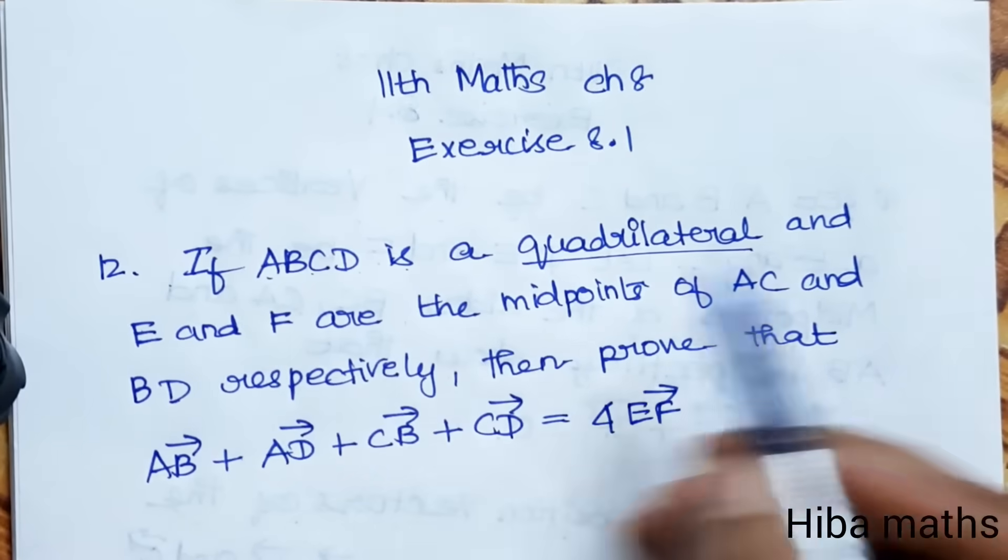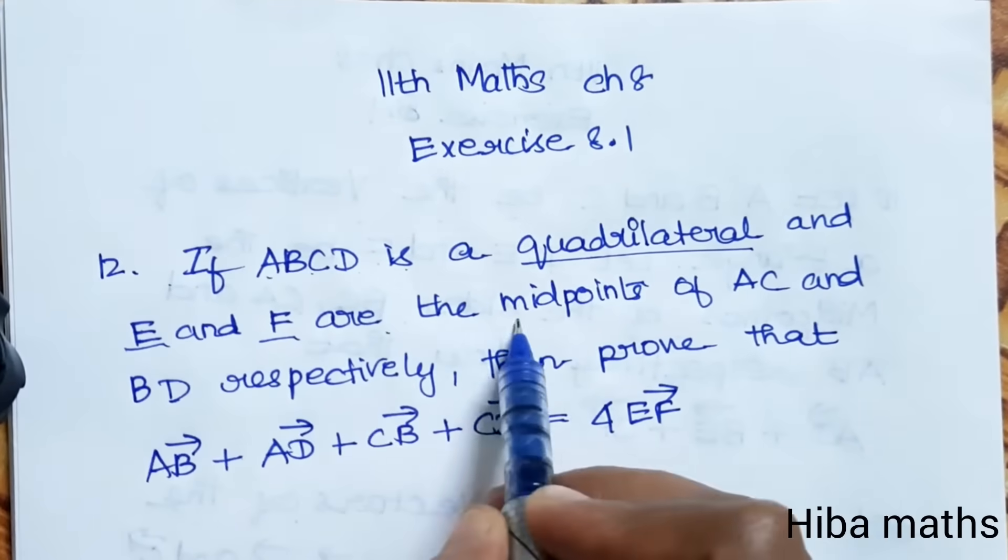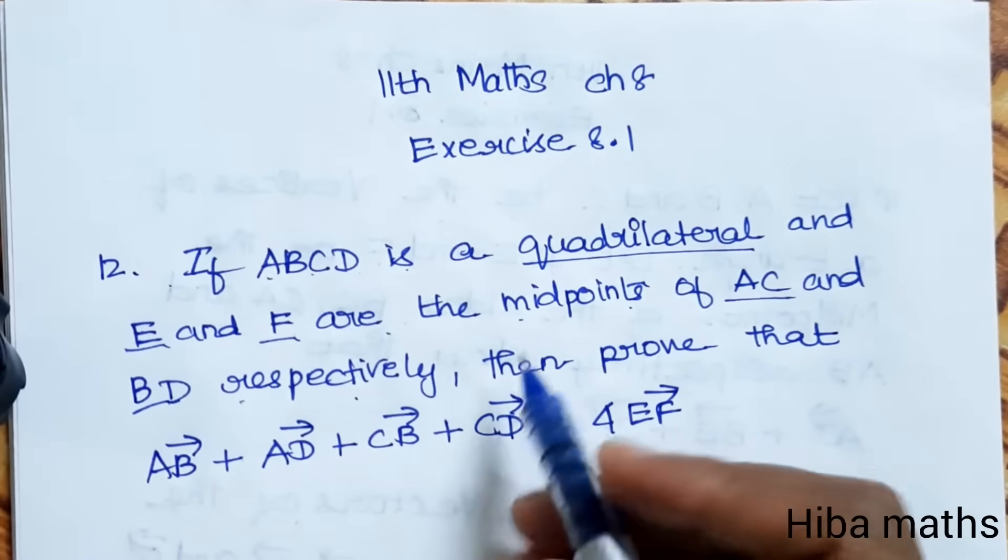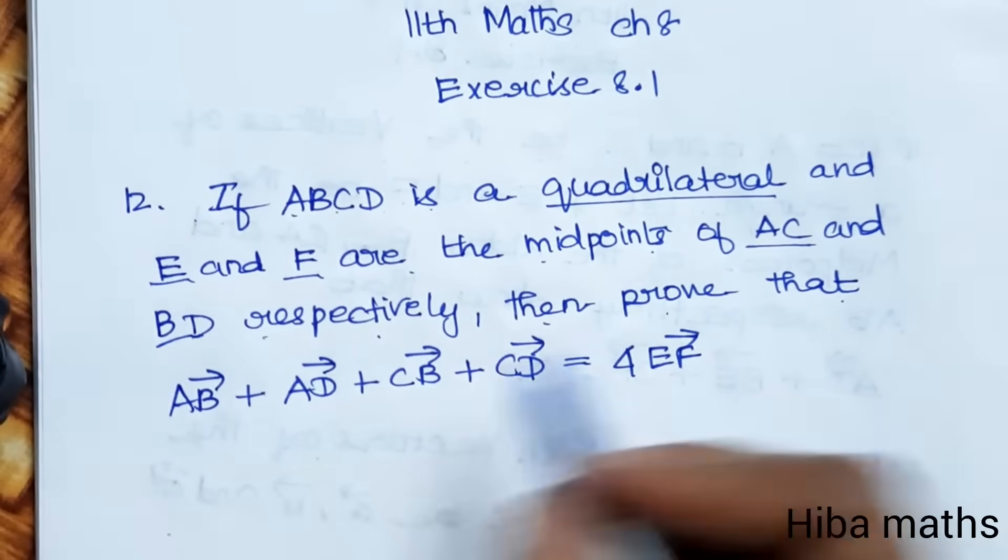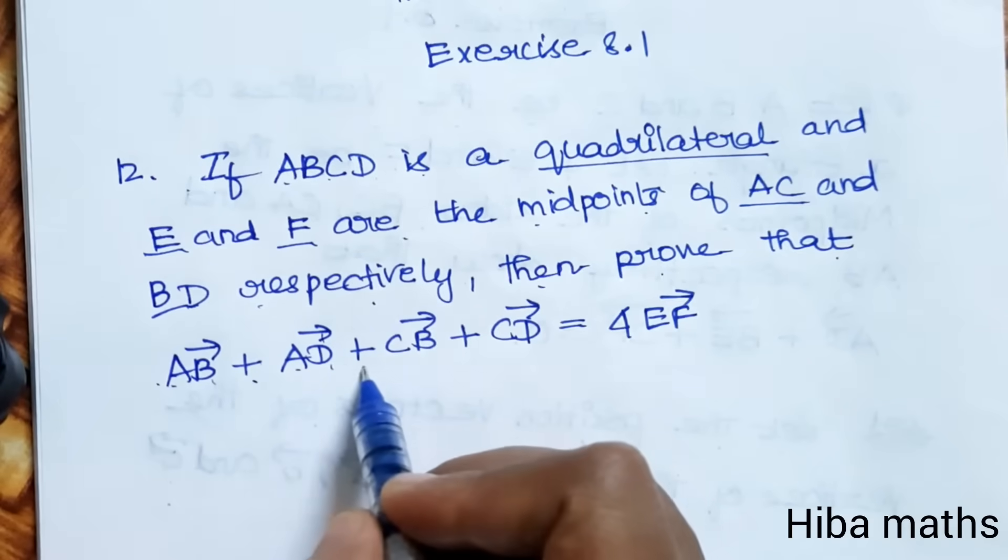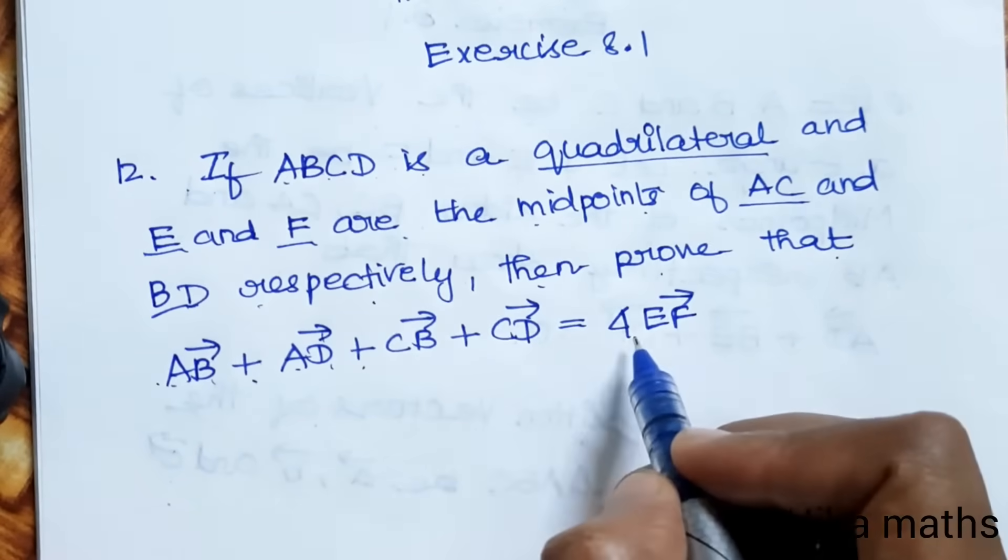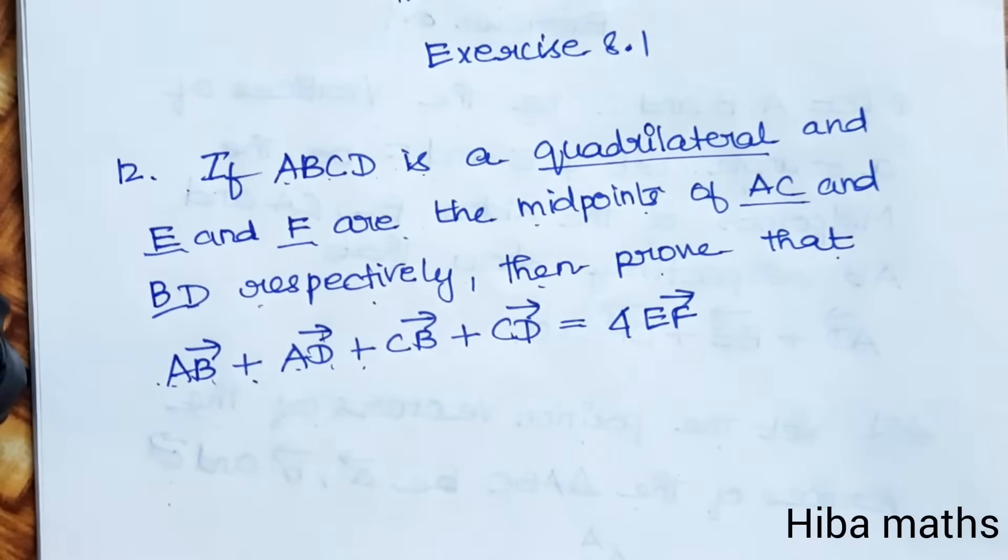If ABCD is a quadrilateral and E and F are the midpoints of AC and BD respectively, then prove that AB vector plus AD vector plus CB vector plus CD vector is equal to 4 times EF vector.